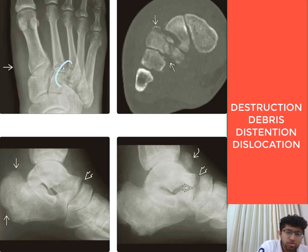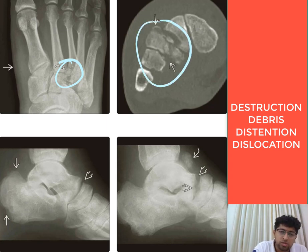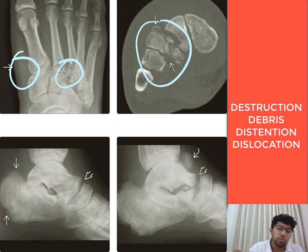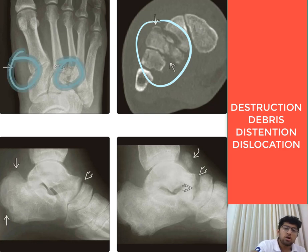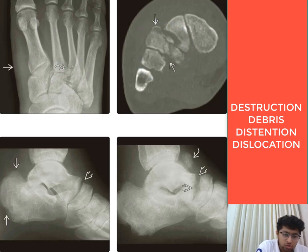In this image, there is destruction of the metatarsal bone heads confirmed by CT images, with swelling at the metatarsal joints. This is another case of Charcot's joint.